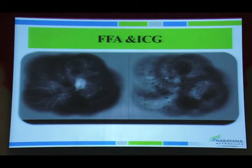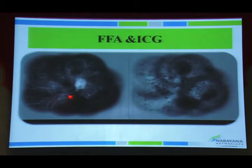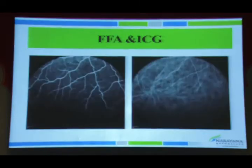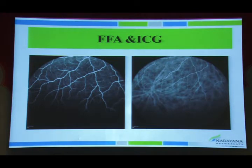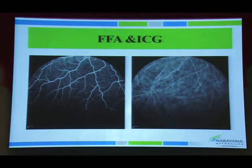The dual imaging mode better defines pathology. In a case of VKH disease, FFA showed disc leak and multiple pinpoint hypofluorescence with pooling of dye, while corresponding ICG showed multiple hypo signs and dark dots throughout the fundus — the extent of involvement was greater on ICG. In a treated VKH child, FFA was normal on follow-up but ICG showed hypo signs and dark dots suggesting ongoing active inflammation, prompting initiation of systemic immunosuppressive therapy.